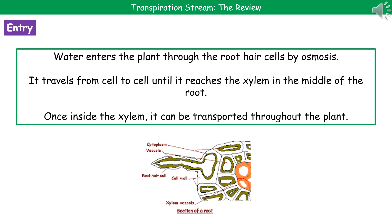Once inside, the water travels from cell to cell until it reaches the xylem in the middle of the root. And once it's in the xylem, it can be transported throughout the rest of the plant.